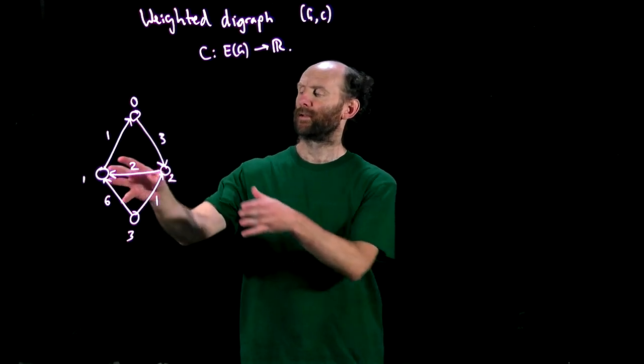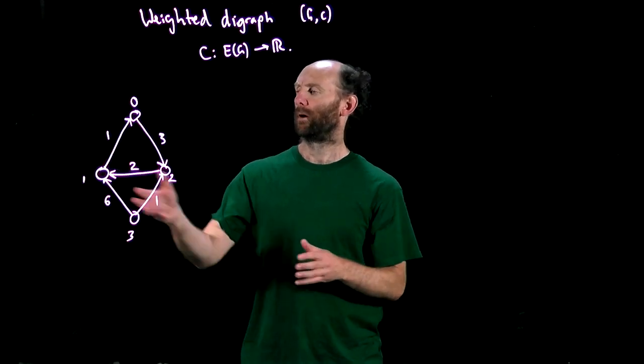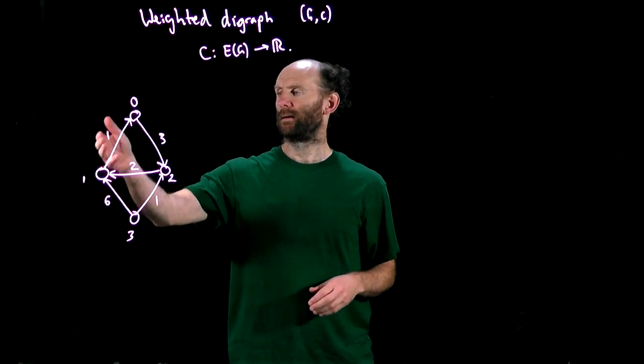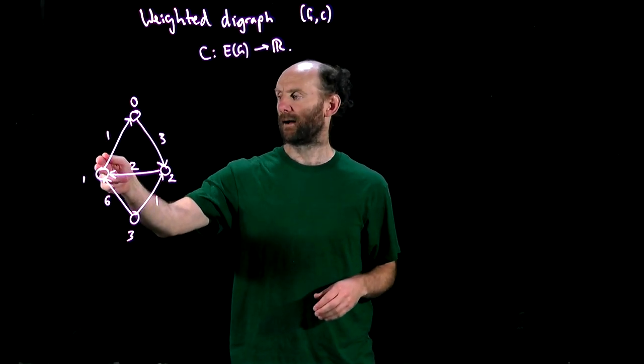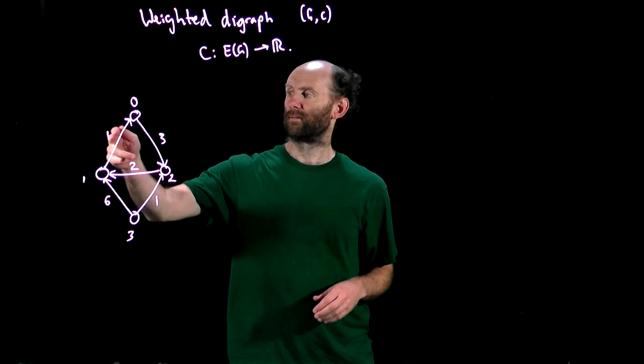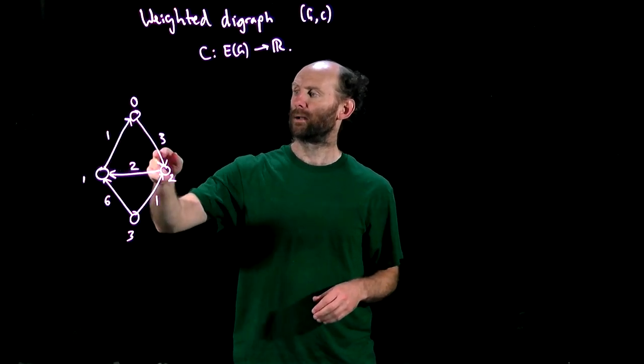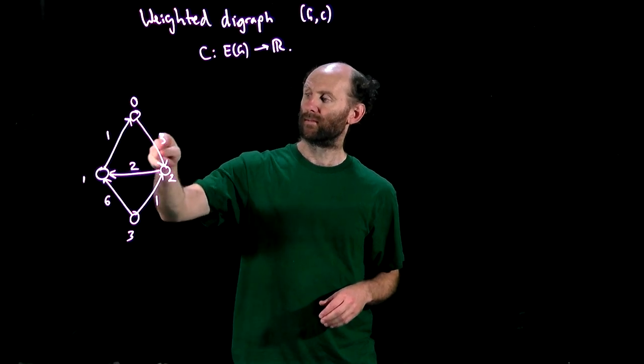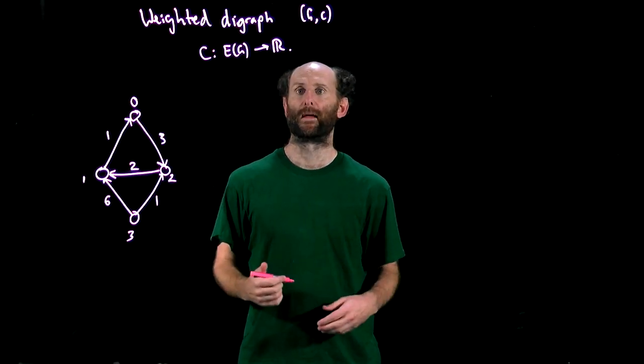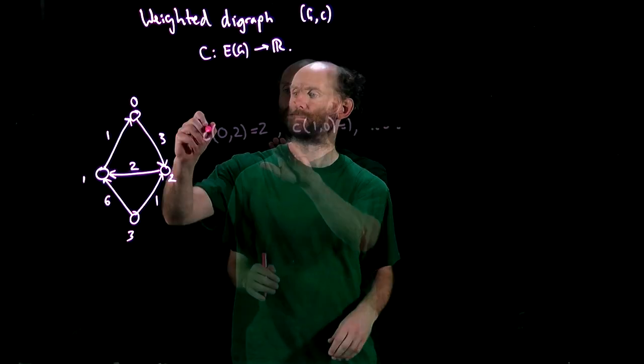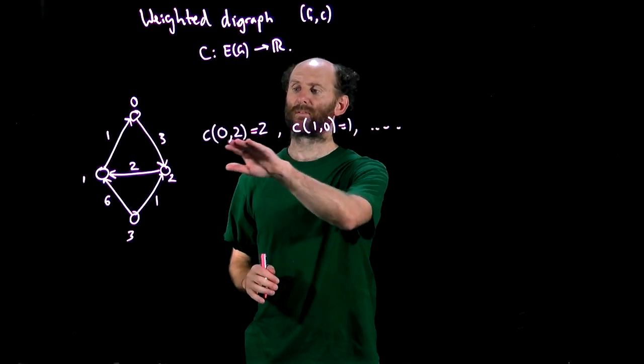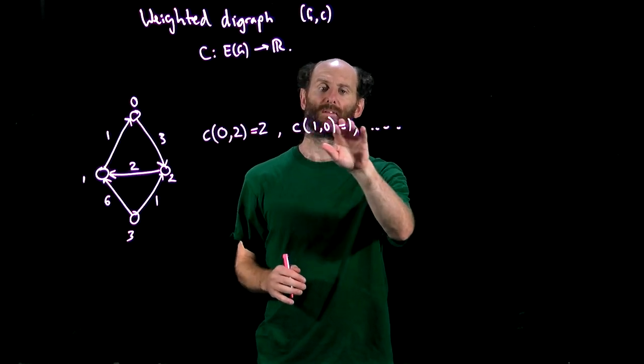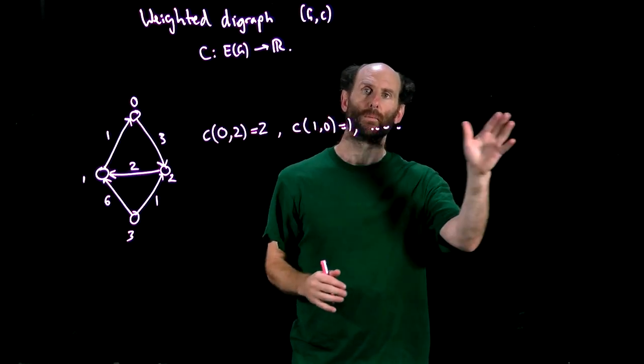So here's an example of a weighted digraph on four nodes. Five arcs, and the weight of the arc from one to zero is given by this number here is one, the weight of the arc from zero to two is three and so on. If we want to write that formally we'd write the cost of the arc zero two is two, the cost of the arc one zero is one and so on.